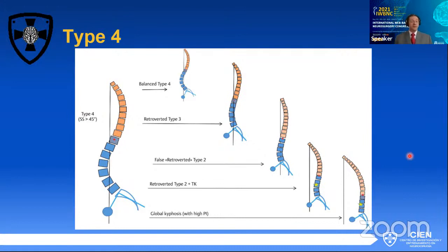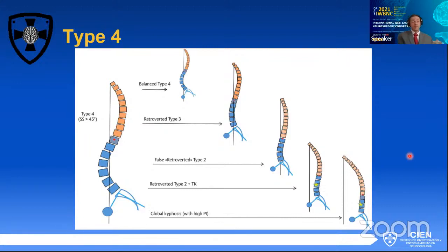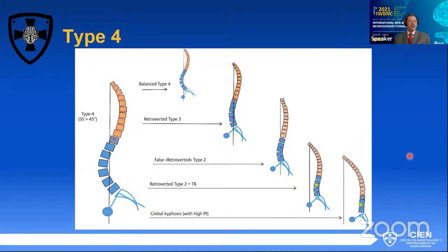When you evaluate sagittal balance, you have to take this into account: first, you want to see how that patient should have been when he was young and everything was okay; what compensatory mechanisms are acting right now and how; and what limitations those compensatory mechanisms have in the present. With that, you can try to establish a surgical or non-surgical plan to treat the problem. Thank you.